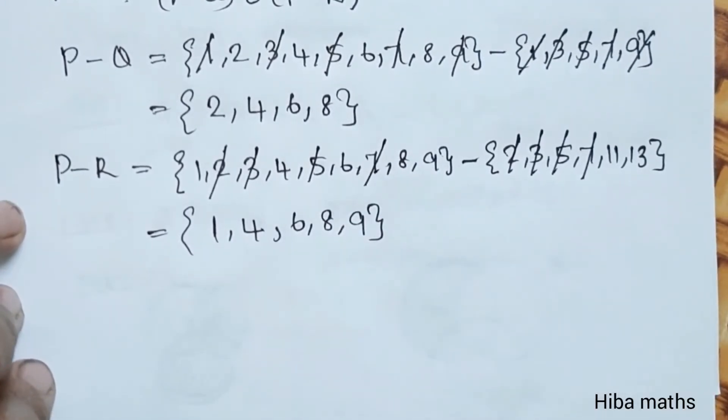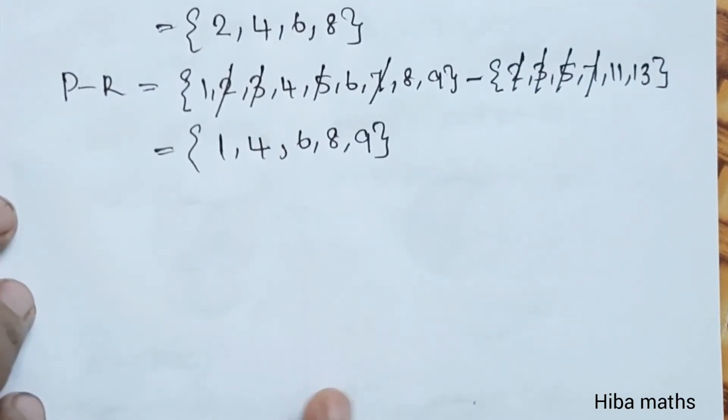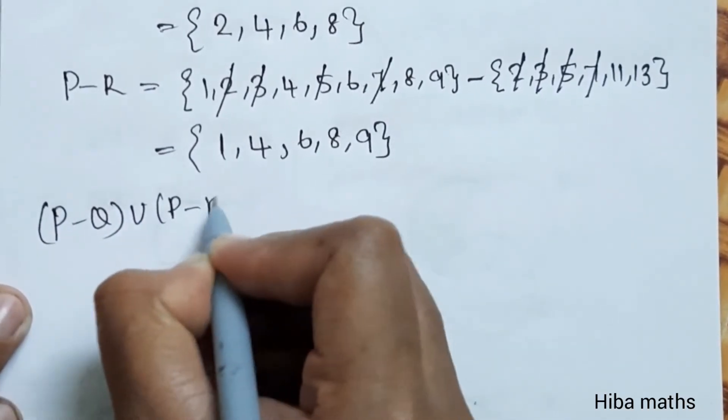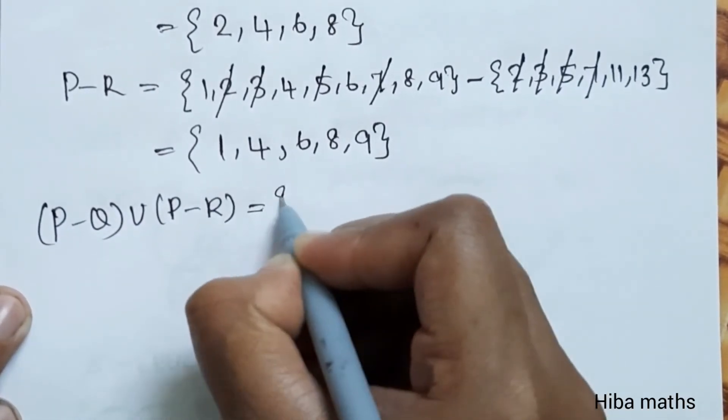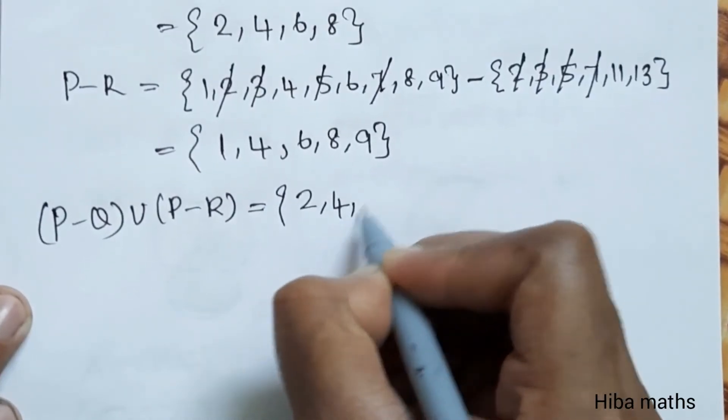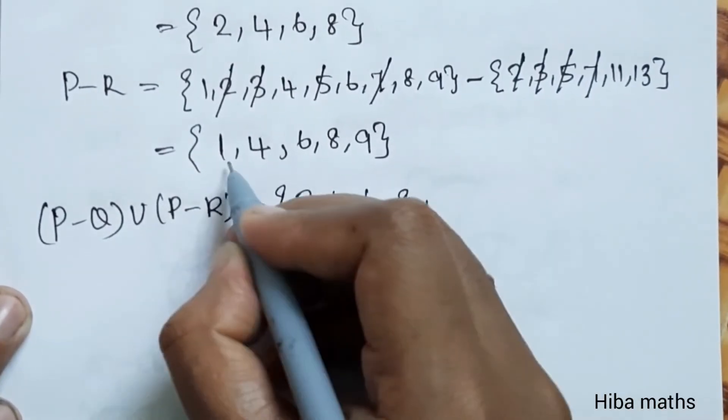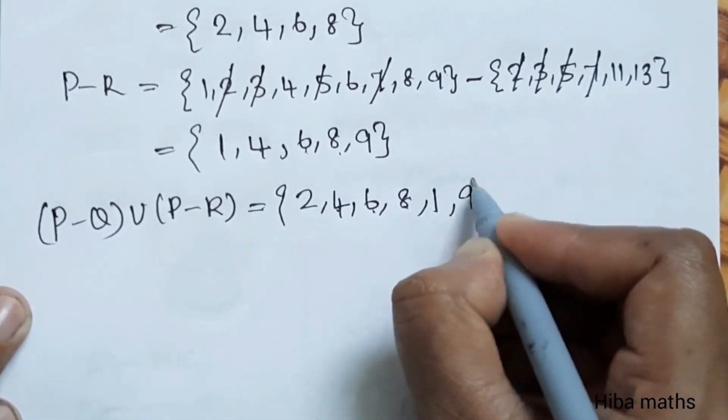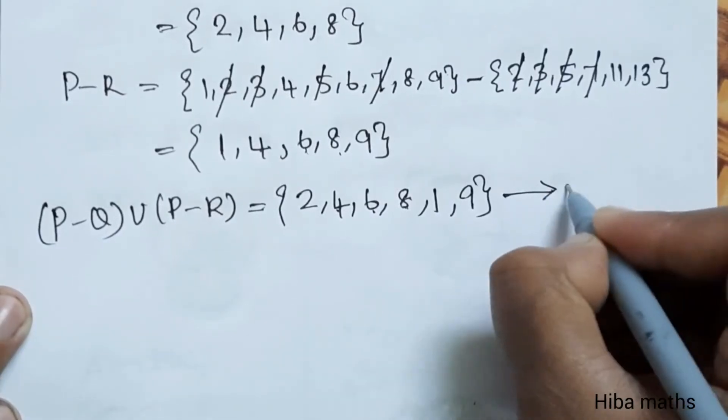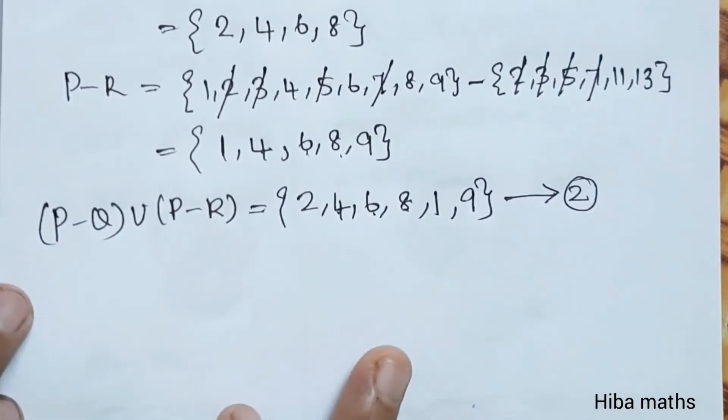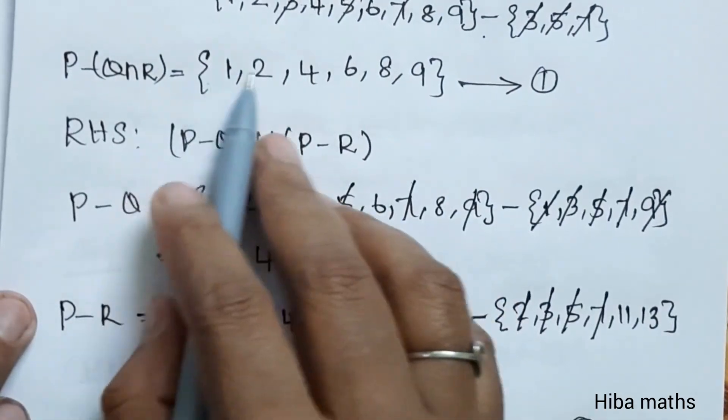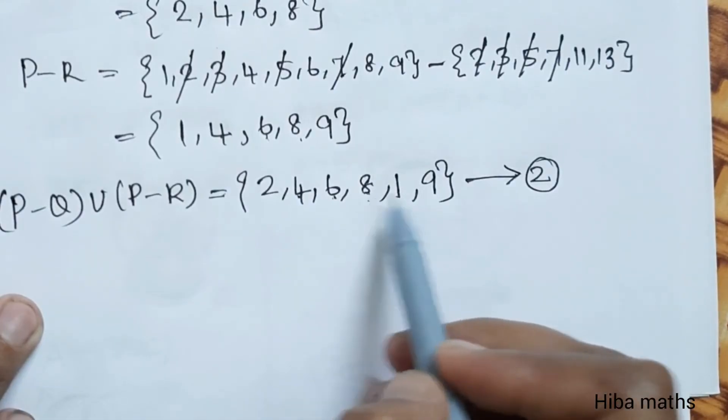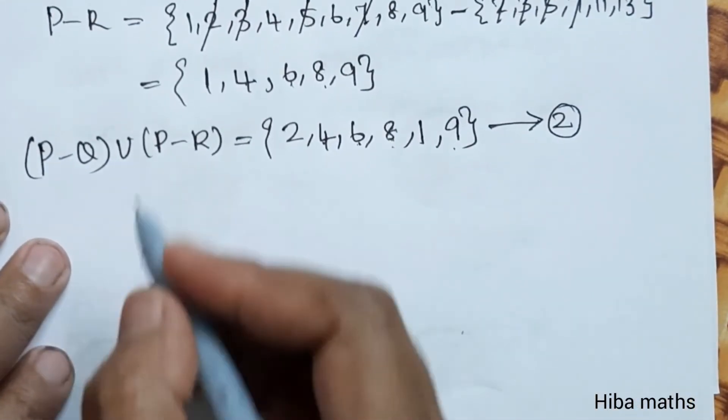Now union the two terms. P minus Q union P minus R. First term is 2, 4, 6, 8. Second term is 1, 4, 6, 8, 9. Union gives 1, 2, 4, 6, 8, 9. This equals LHS.